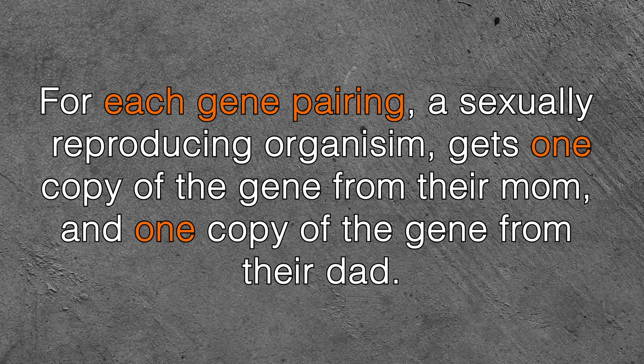We're actually going to be talking about recessive, dominant, co-dominant, and incomplete dominant genes in this week's video. Now for each gene pairing, a sexually reproducing organism, like a snake, gets one copy of the gene from their mom and one copy of the gene from their dad. Since we're focusing primarily on visual representations of mutations in reptiles, specifically in ball pythons, we're going to narrow our focus on those for our genetics discussion.